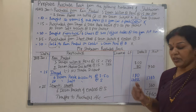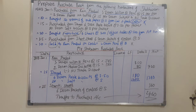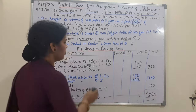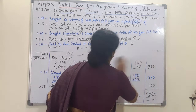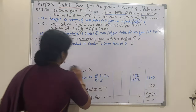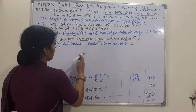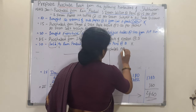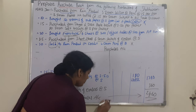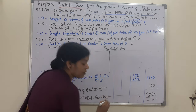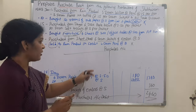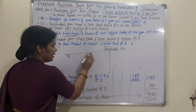Now let me show you how to transfer the total into the purchase account. When you open the purchase account, the total is transferred to the debit side — why debit? Because all purchases are expenses, and as per the nominal account rule, expenses go to the debit side. So in the purchase account, debit side, you mention: 'To Sundry Purchases — 2460 rupees.' This means the total month's purchases are visible directly in the purchase account.